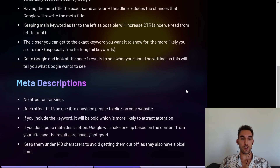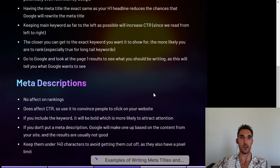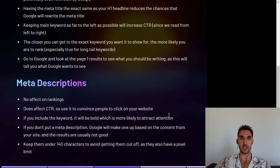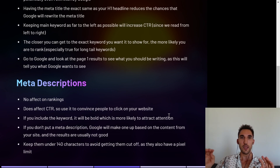You can go without putting a meta description on your website, but if you don't, Google is going to make one up based on the content of your site — and usually the results are not very good and they read like rubbish. So you want to make sure that you put one in just so you don't let Google do it on its own. The last thing is try to keep them under 140 characters to avoid getting them cut off, as meta descriptions also have a pixel limit — somewhere between 700 and 900 pixels — but under 140 characters usually won't get cut off.